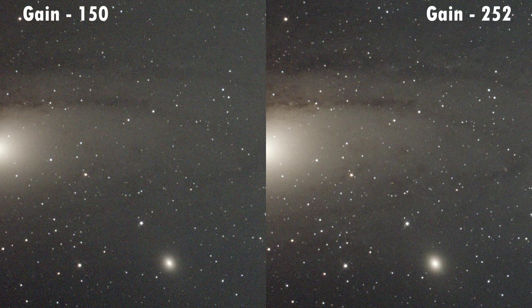When comparing resulting images at gain 150 and 252, I can see more structure in the shots at 252 without a noticeable increase in noise. There was also increased contrast and perceived definition in the outer dust lanes, and the dwarf satellite galaxy M32 appears brighter in the image also.